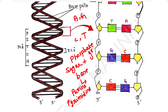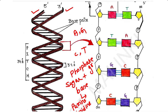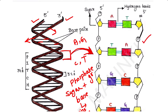In DNA, the sugar and phosphate group form the backbone. As you can see, this backbone contains the sugar and phosphate group, while the nitrogenous bases project inwardly into the inner part of the DNA.